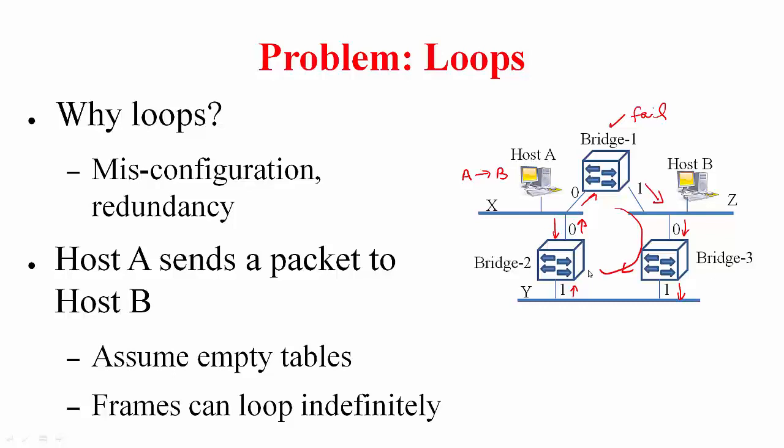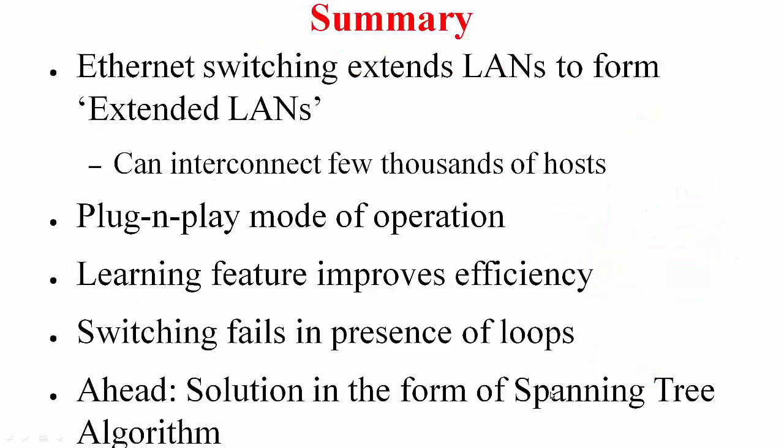Similarly, when host A originally sent the packet bridge 2 is going to get and this is going to send the packet like this. So there is one frame circulating in this fashion through bridge 1 and another frame circulating in this fashion via bridge 2 and these frames can loop indefinitely. You do not want that because it wastes the capacity of the Ethernet. So how do you solve it? We will cover it soon.